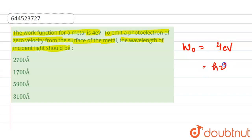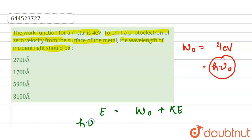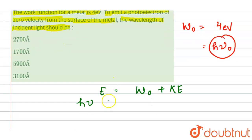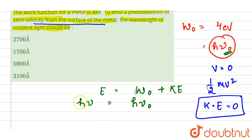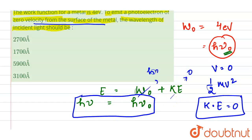W₀ = hν₀. We know that energy E = W₀ + KE, and this energy is equal to hν. So hν = hν₀ + KE. It is given that the photoelectron has zero velocity, so v = 0, which means KE = ½mv² = 0. Therefore hν = hν₀, meaning the photon energy equals the work function.